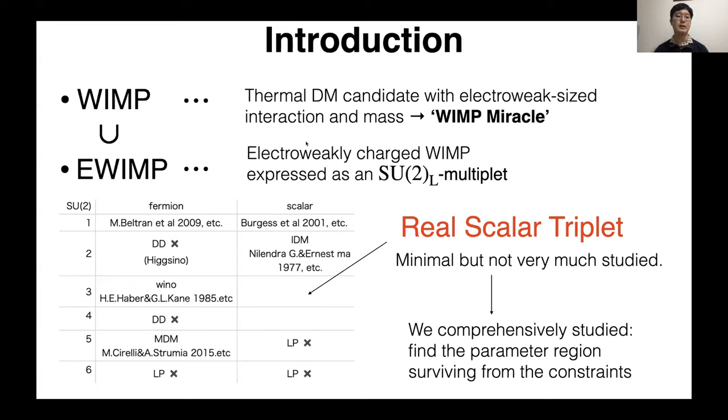However, uncharted types of WIMP still exist, and one of them is EWIMP. EWIMP is electroweakly charged WIMP expressed as an SU(2)_L multiplet, and this can be classified as this table.